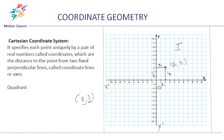Now, what is a quadrant? This is the first quadrant, this is the second quadrant, this is the third quadrant, and this is the fourth quadrant. There are only four quadrants. In the first quadrant, you can see values like 1, 2, 3… up to 10 — all are positive on both axes. So in the first quadrant, it is plus, plus — x-axis positive and y-axis positive.